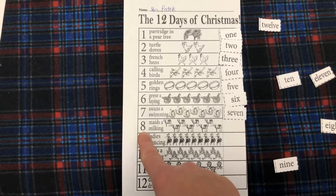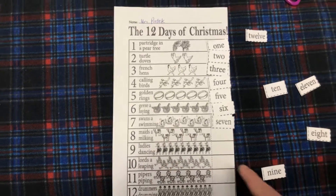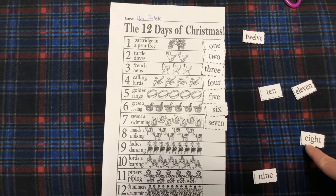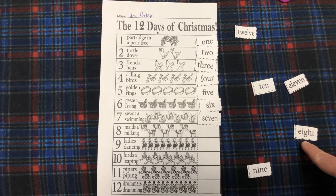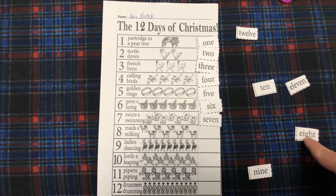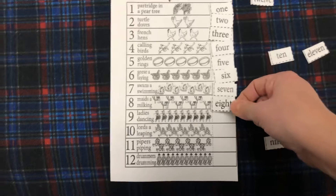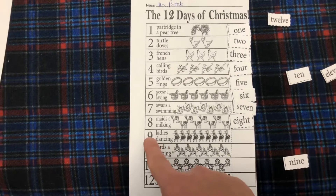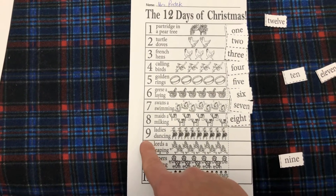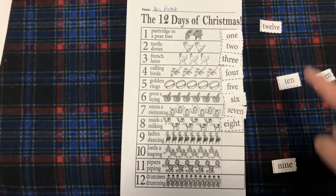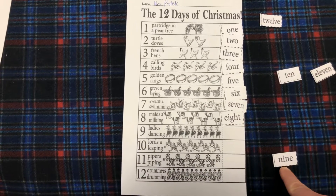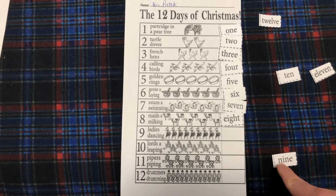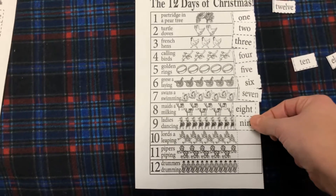Now this one is eight. Remember, this is another sight word you guys had. Eight — but it's not like A-T-E, which is when you eat something. This is different: E-I-G-H-T. So glue it there. Now this one is what number? Nine — N-I-N. Remember, Mommy E tells the I to say its name. N-I-N-E. Good job.